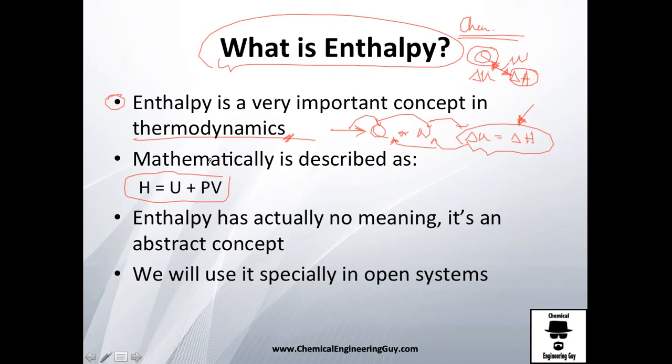Enthalpy is mathematically just this variable: internal energy plus the product of pressure and volume — H = U + PV.